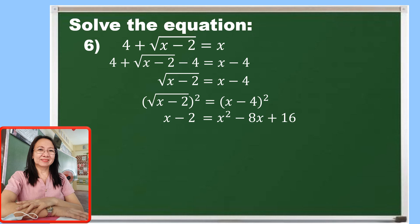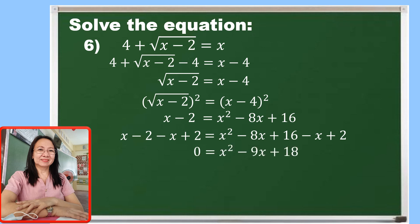Let us simplify by the addition property of equality to combine like terms. Adding the opposite of x minus 2, which is negative x plus 2, to both sides, x minus x is 0 and negative 2 plus 2 is 0 on the left side. On the right side, we copy x squared, then negative 8x minus x is negative 9x, and 16 plus 2 is 18. Factoring this gives us the quantity of x minus 6 times the quantity of x minus 3 is equal to 0.